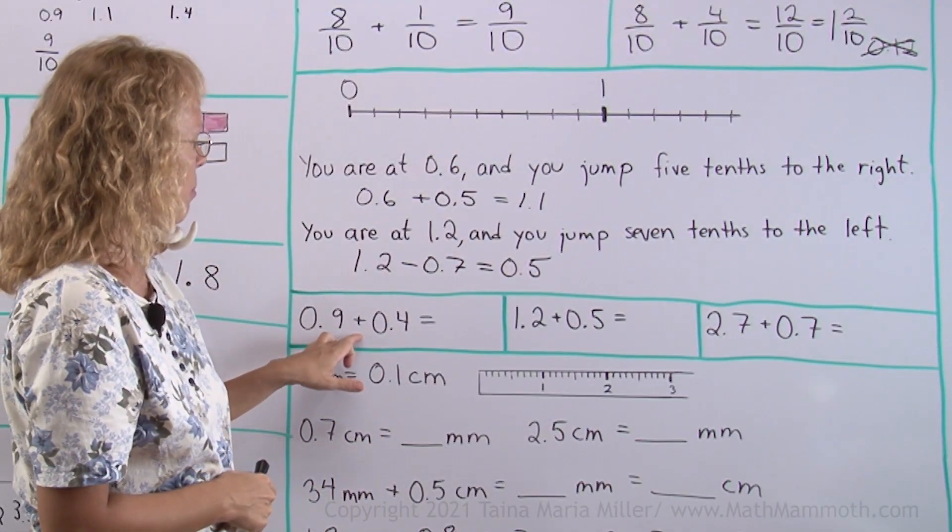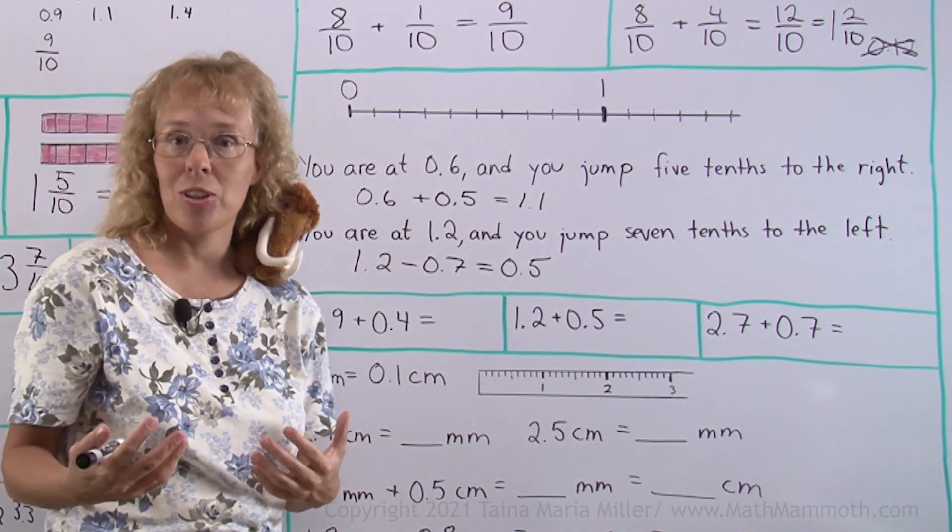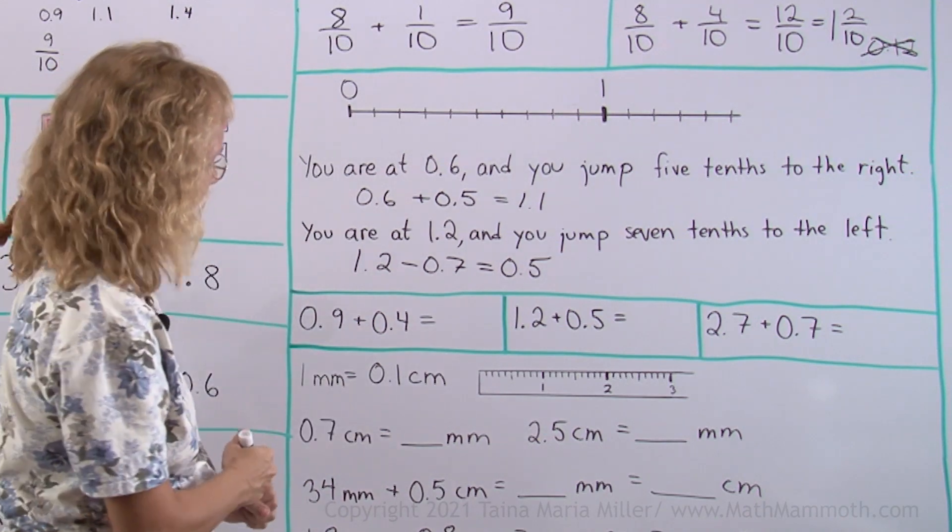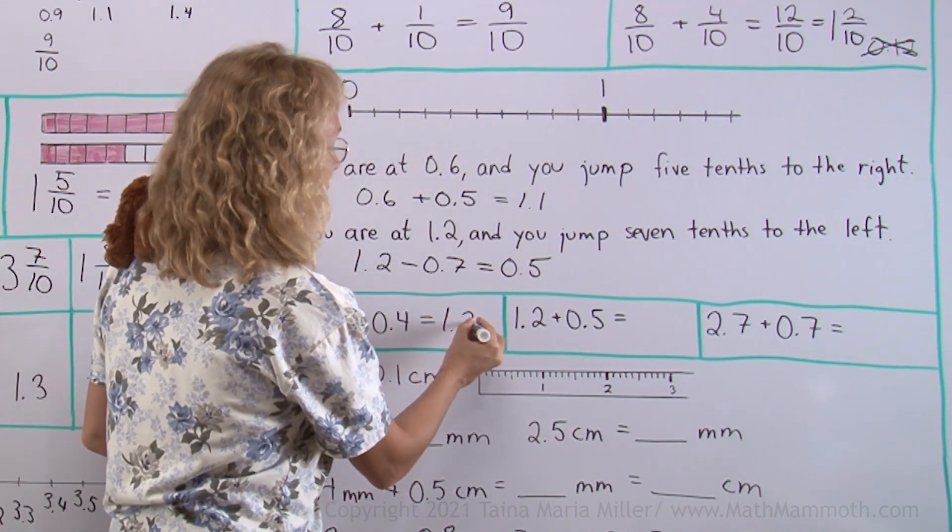Okay. Some more. 9 tenths plus 4 tenths. Can you tell how much that will be? It's not going to be 0.13. It's going to be 1 and 3 tenths.